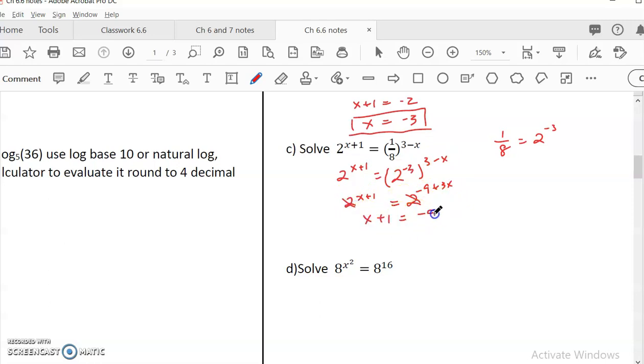x plus 1 equal to negative 9 plus 3x. I minus x on this side. So that would be 2x, negative 9 plus 2x equal to 1. And then I plus 9 on both sides. I have 10 equal to 2x. x is equal to 5. That's the answer.